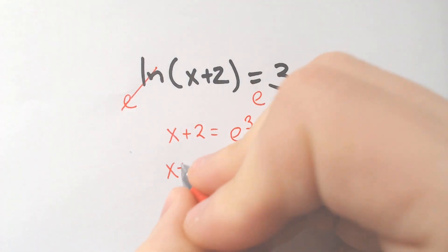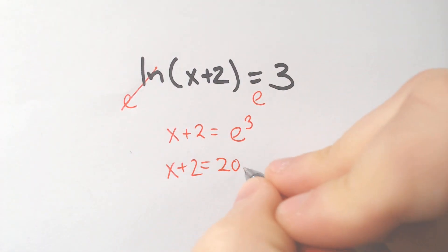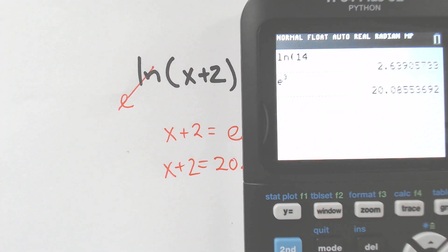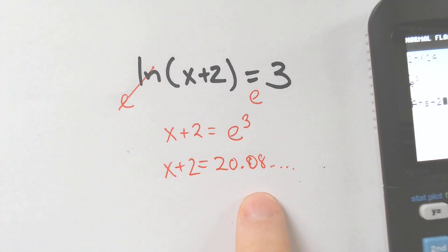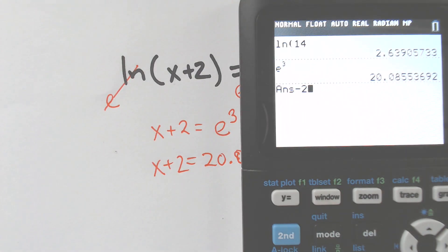We got X plus 2 is equal to the 20.08, and it goes on for a while. Well, and then from here, I just want to subtract 2 because X plus 2 is equal to this. If I subtract 2, I get my answer,